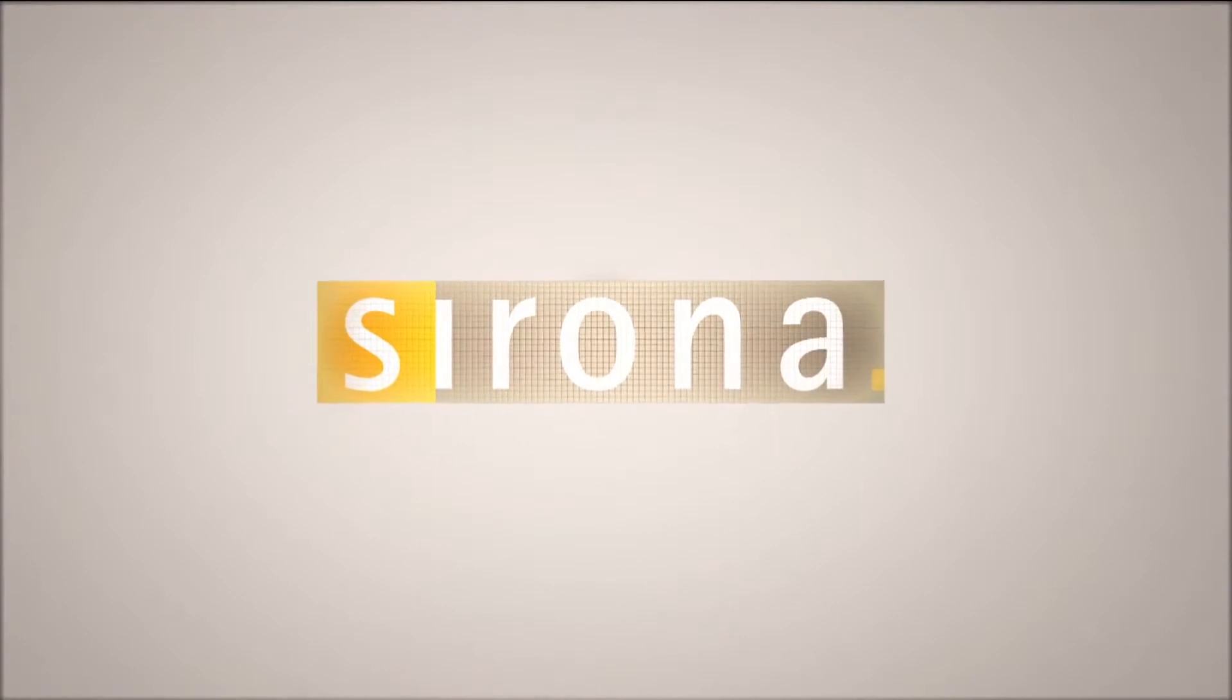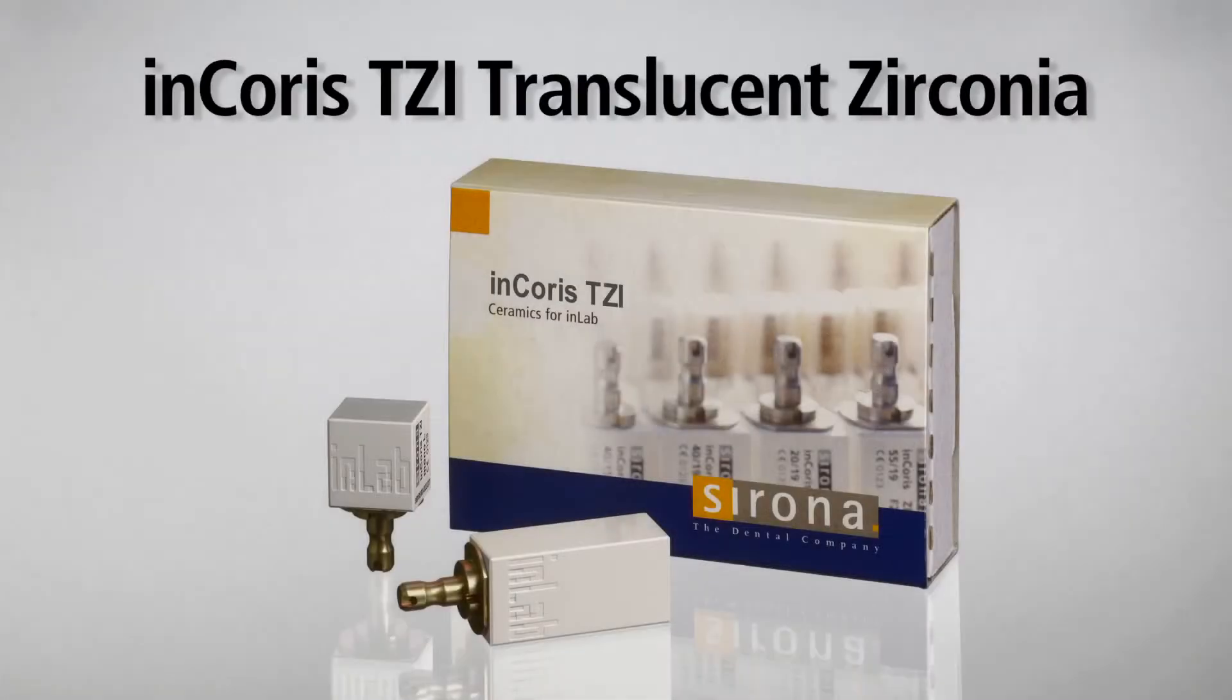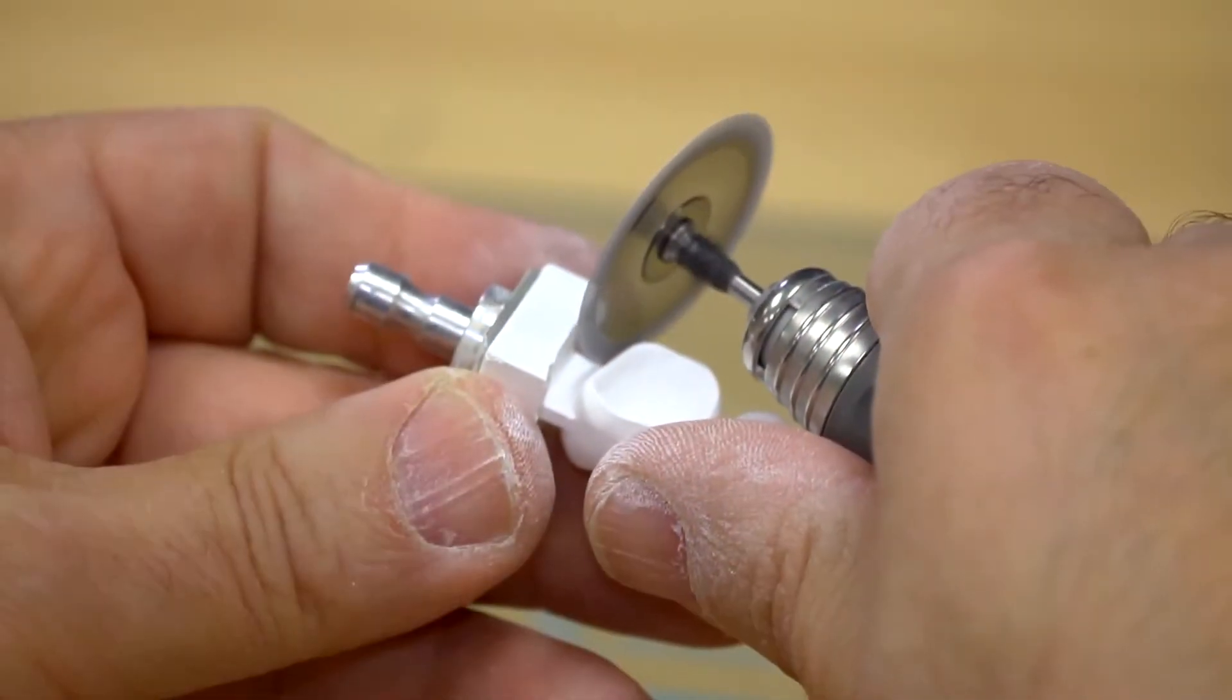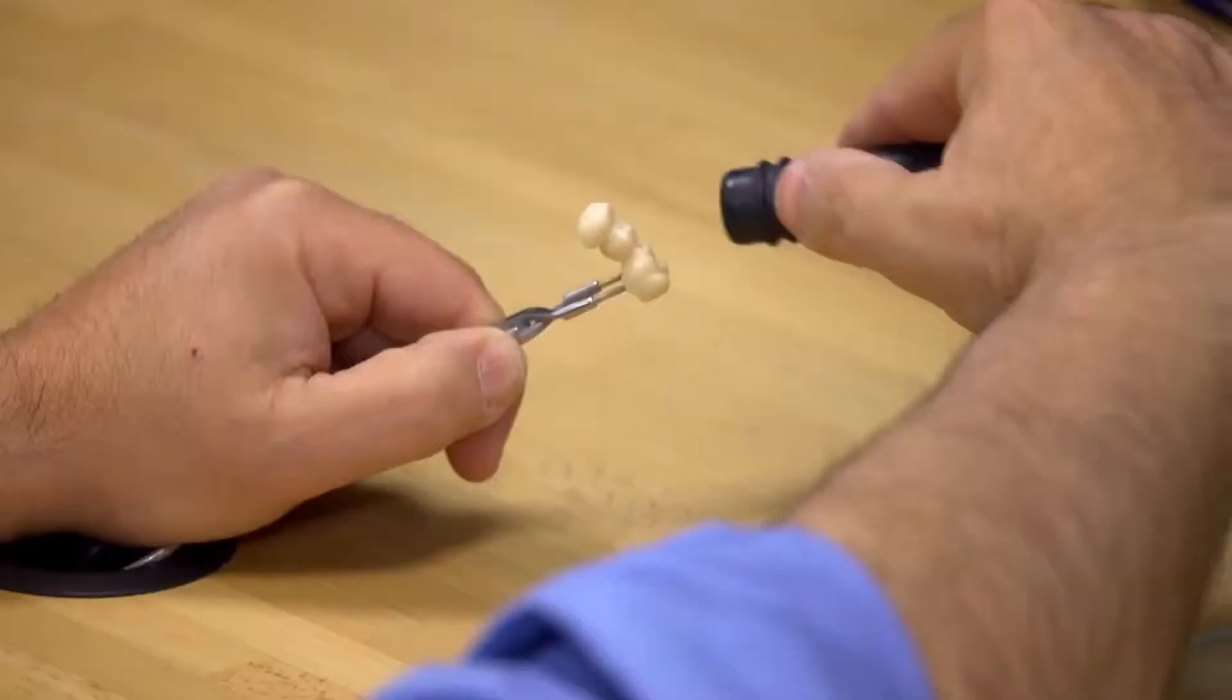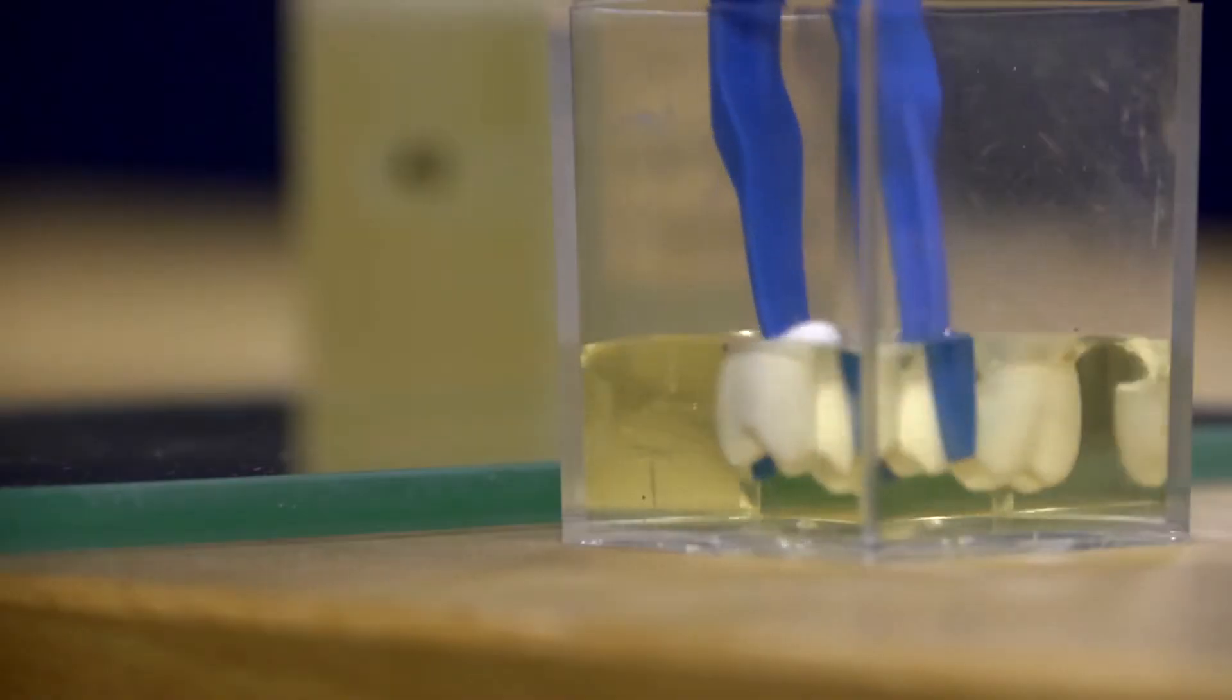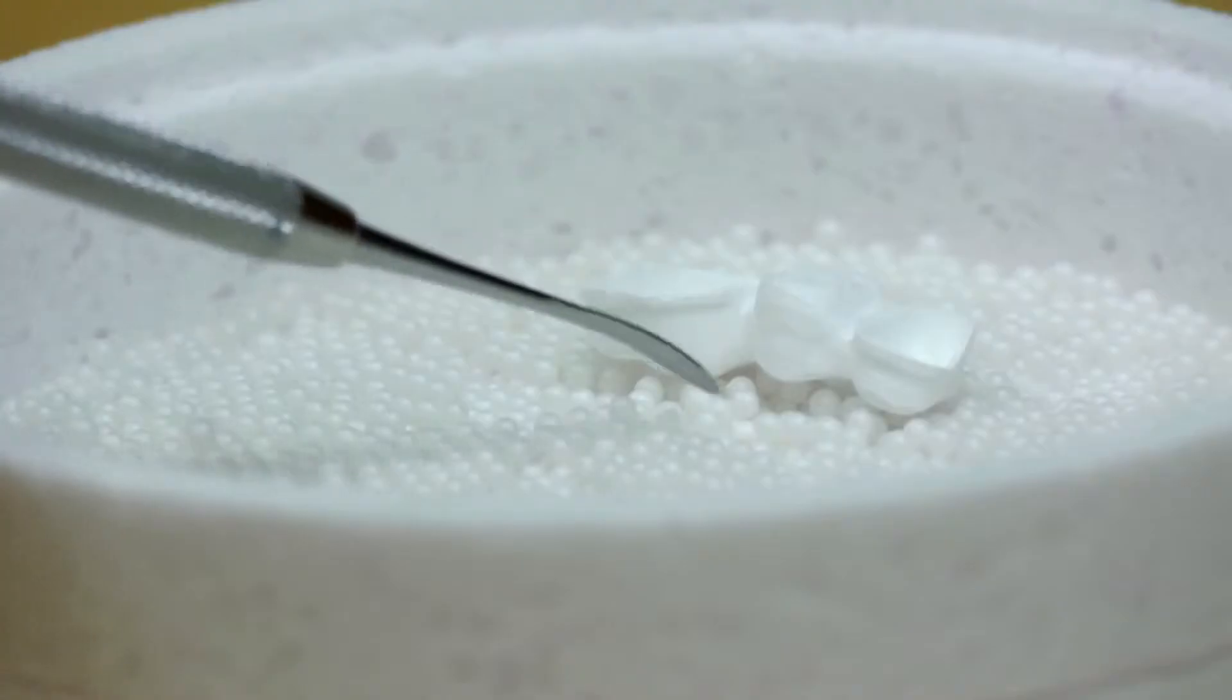In this tutorial, we will learn the necessary steps to mill and finish Chorus TZI Full Contour Zirconia Restorations with Sirona InLab. This revolutionary material provides highly translucent zirconia restorations with the ease and precision of the Sirona InLab family of products.